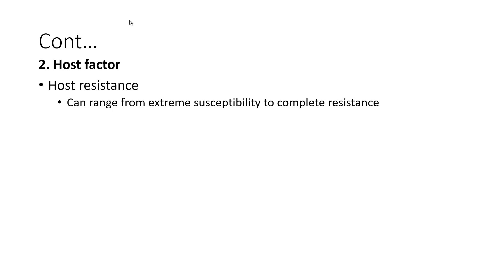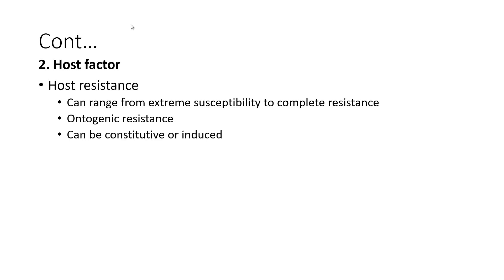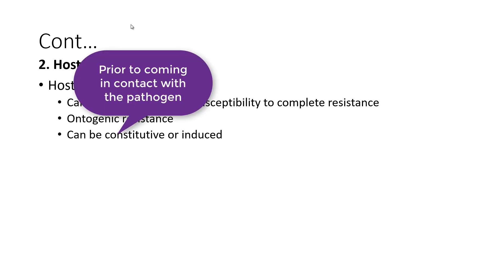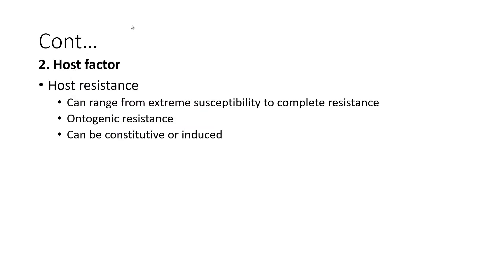Host resistance can range from extreme susceptibility to complete resistance. Ontogenic resistance is age-related — as the plant matures, resistance against a pathogen also increases. It can also be organ-specific, such as constitutive resistance, where the defense mechanism in the plant is already present prior to coming in contact with the pathogen. For example, hairs on the leaves, thorns, or a thick cuticle are some of these defense mechanisms. Whereas for induced resistance, the host and the pathogen have to come in contact with each other for the activation of the defense mechanism. For example, the release of certain toxic compounds by the host as a response to the invading pathogen.